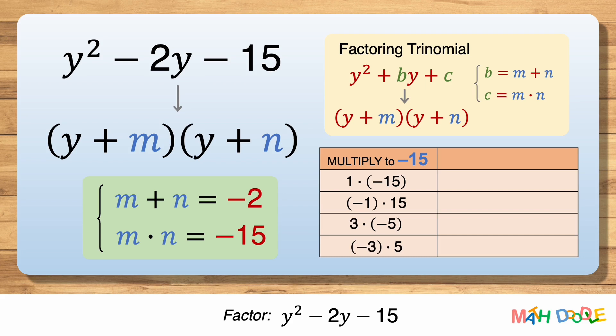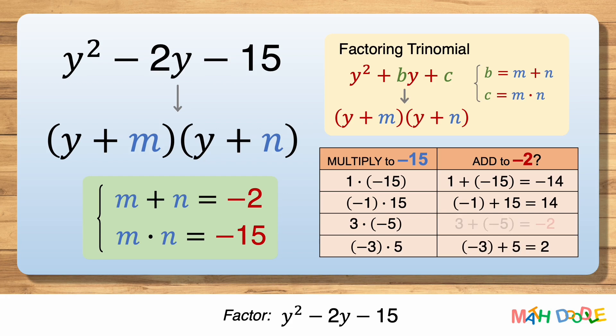Now let's see which of these combinations adds to minus 2. 1 plus minus 15 is minus 14, so 1 and minus 15 do not add to minus 2. Minus 1 plus 15 is 14, so minus 1 and 15 do not add to minus 2. Minus 3 plus 5 is 2, so minus 3 and 5 do not add to minus 2. Now 3 plus minus 5 is minus 2, so 3 and minus 5 not only multiply to minus 15 but also add to minus 2.